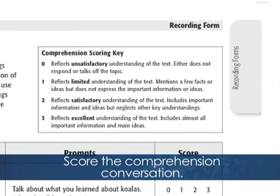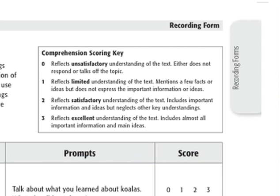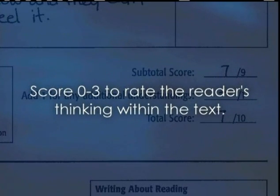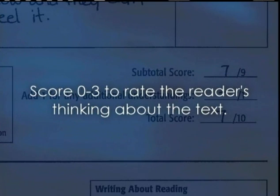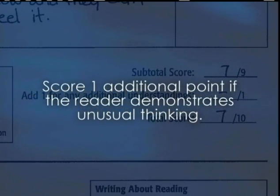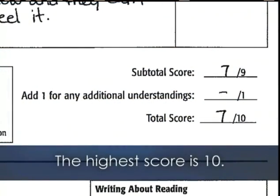Rephrase questions to be sure the reader understands — for example, 'Why would that make people want the nest taken down?' You can check off key understandings in the first column on the recording form. If a student does not spontaneously offer evidence, probe using the prompts in the second column. Score the comprehension conversation using the rubric: 0 to 3 for thinking within the text, 0 to 3 for thinking beyond the text, and 0 to 3 for thinking about the text. One additional point can be awarded for unusual, excellent thinking not listed in the key understandings, so the highest score is 10.